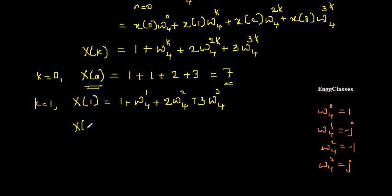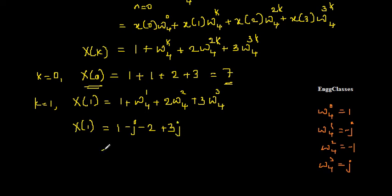Substituting the twiddle factor values for k=1: W_4 to the power 1 is minus j, giving 1 minus j; W_4 to the power 2 is minus 1 times 2 giving minus 2; and W_4 to the power 3 is plus j times 3 giving 3j. Simplifying: 1 minus 2 is minus 1, and minus j plus 3j is plus 2j. Therefore X(1) = minus 1 plus 2j.